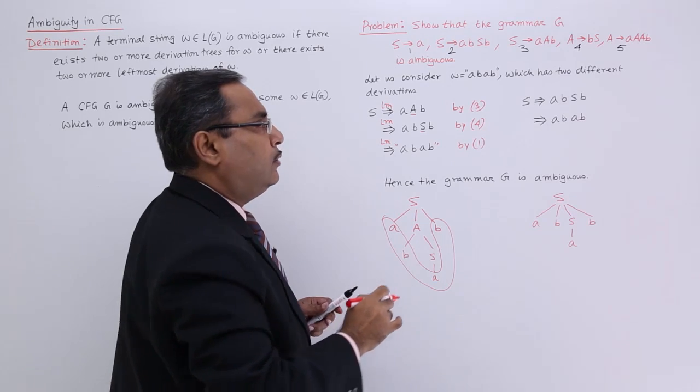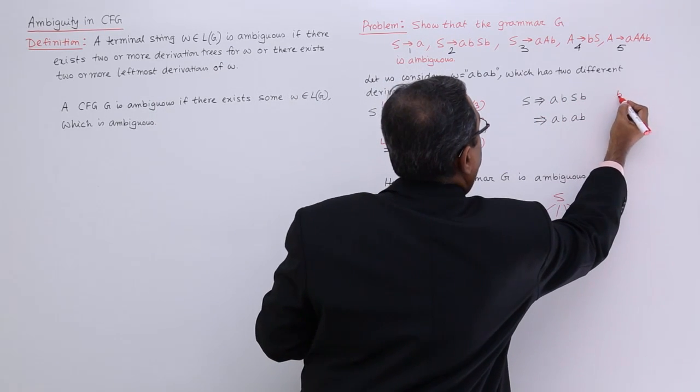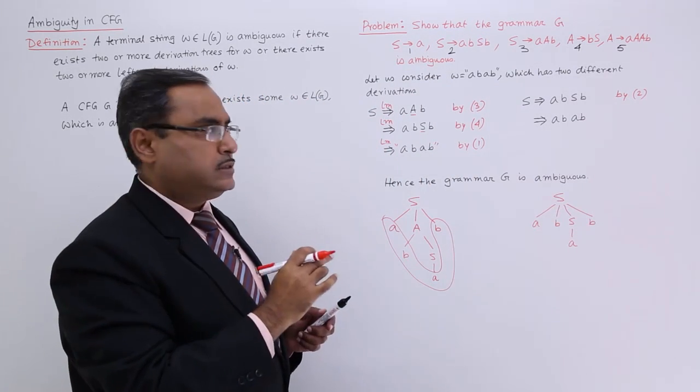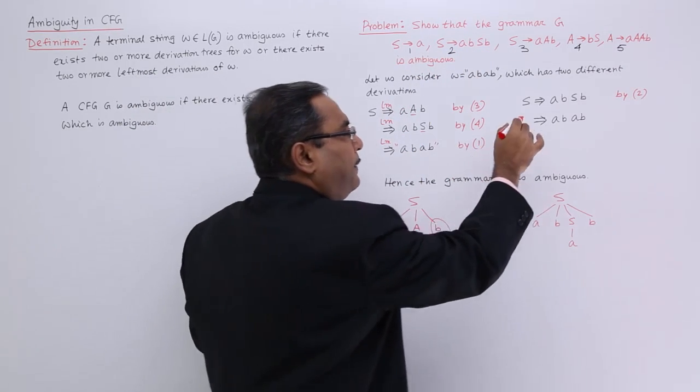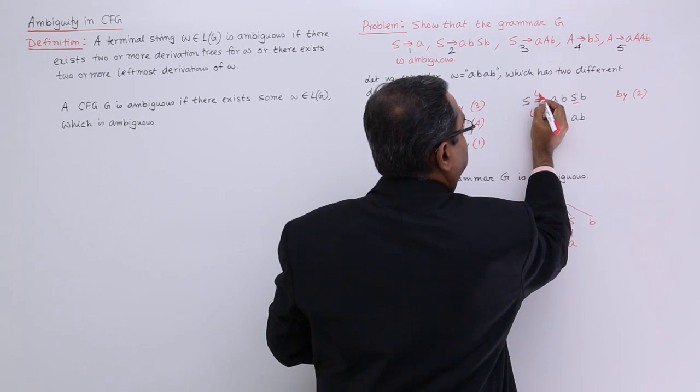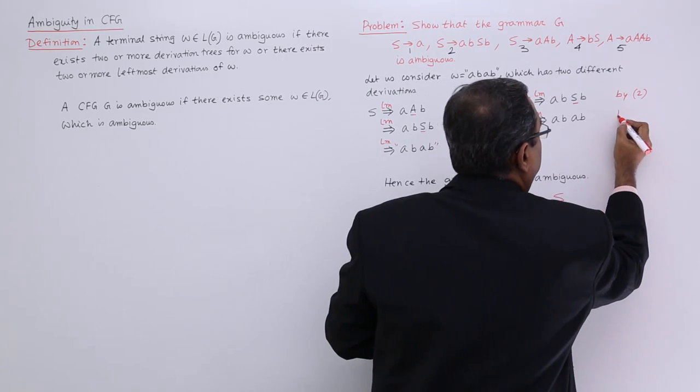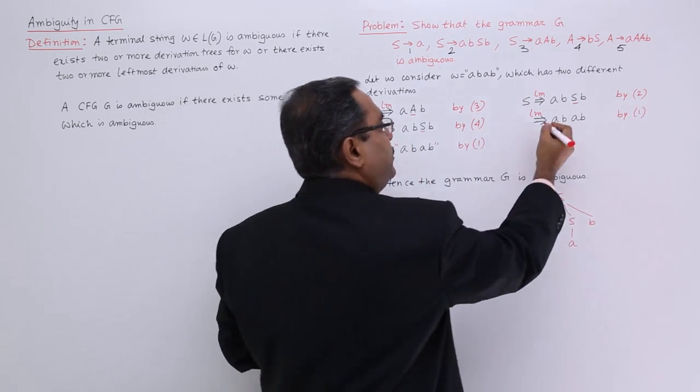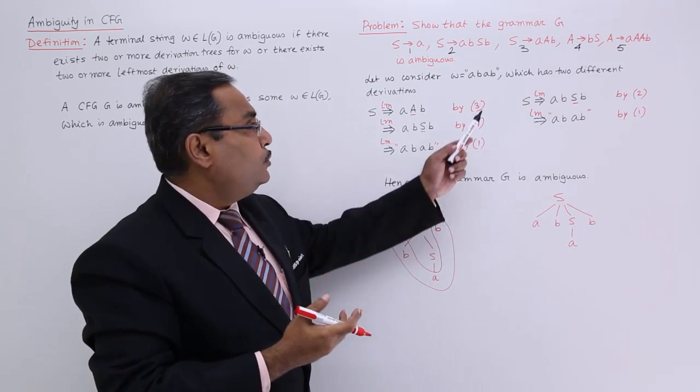Now S produces aBSB, by production rule number 2. I'm applying that one at first, so S produces aBSB. Now from the left-hand side we are having this one as the non-terminal. That S has been replaced by a, so by production rule number 1 I am going to get the same string, that is abab. I am going to get the same string abab which was there here.